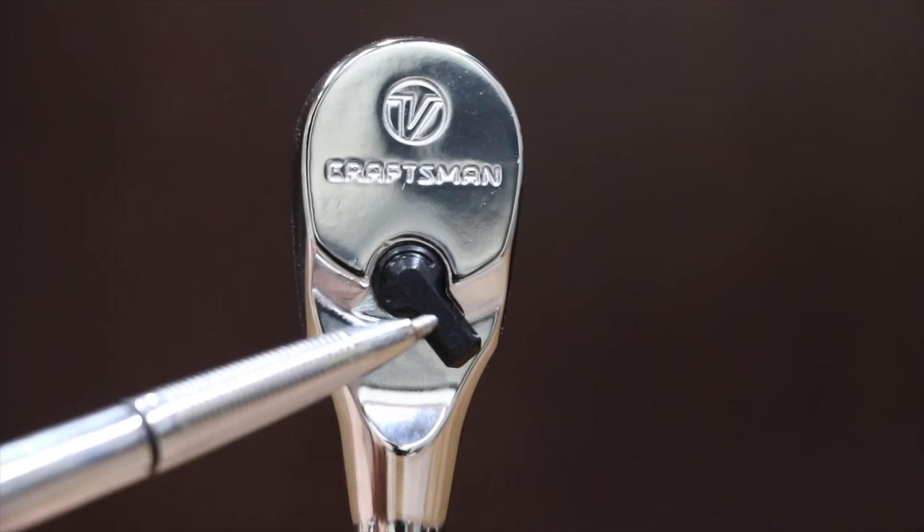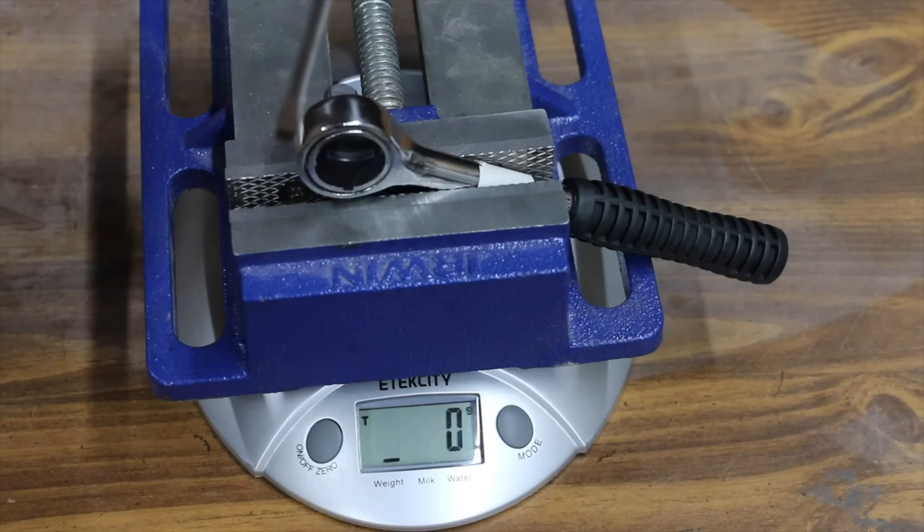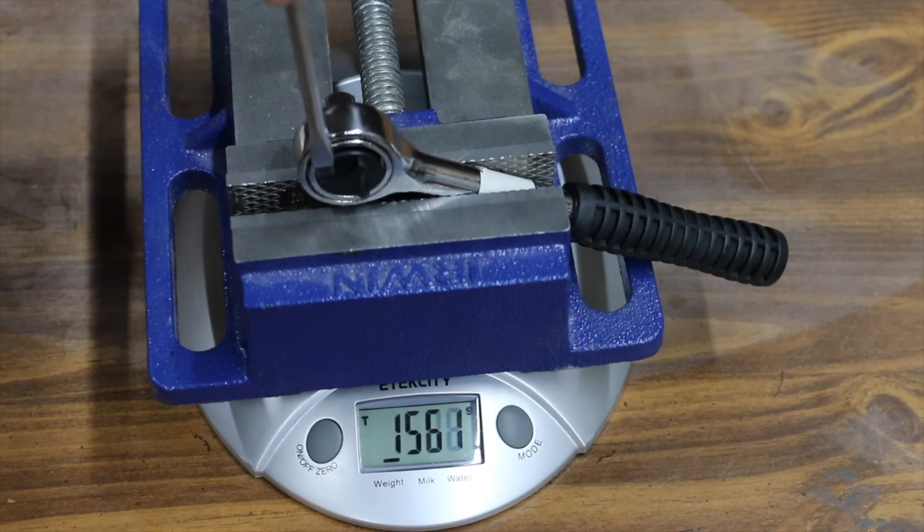If your hands are greasy, a stiff directional lever can really make things difficult. I measured directional lever performance using a scale and a screwdriver. The Performance Tool ratchet finished in dead last on this test at 1,561 grams or about 3.5 pounds of force to change directions.